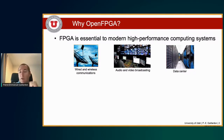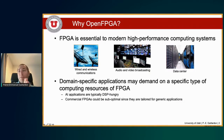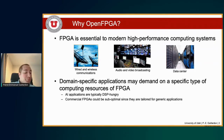FPGAs are essential to modern high-performance computing systems. Not only are they found in many industrial, defense, and IoT applications, but they're also ubiquitous in wired and wireless communication, audio-video broadcasting, data centers, and so on. However, there is more and more demand for domain-specific applications that would make good use of specific types of computing resources in FPGAs. I like to give the example of AI applications, where AI is typically GPU-centric. However, commercial FPGAs are tailored for being general purpose and may not fully perform at their best in some specific domains.